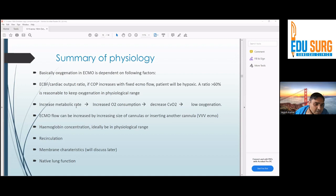In case there is increased metabolic rate, it will lead to increased oxygen consumption. Increased oxygen consumption will lead to decrease in venous oxygen saturation. This venous oxygen saturation or content of venous oxygenation is mixing in the right atrium. It will lead to low oxygenation.